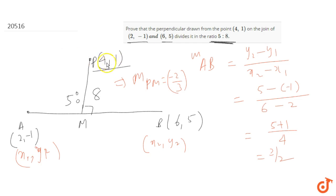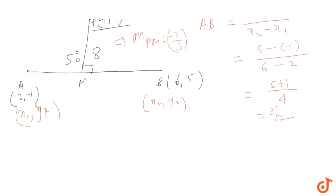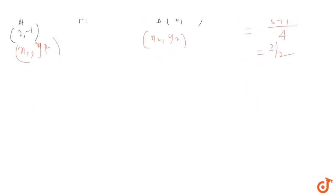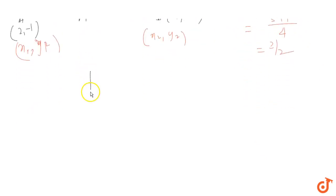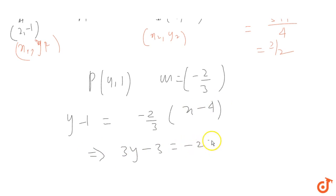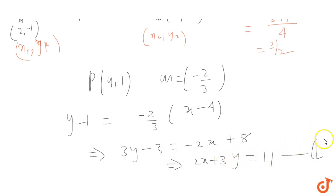Now we have the slope of line PM, so we will find the equation of line PM. Point P is (4,1) and slope is -2/3. So the equation will be: y - 1 = (-2/3)(x - 4), which gives 3y - 3 = -2x + 8, so 2x + 3y = 11. Let's call this equation number 1.